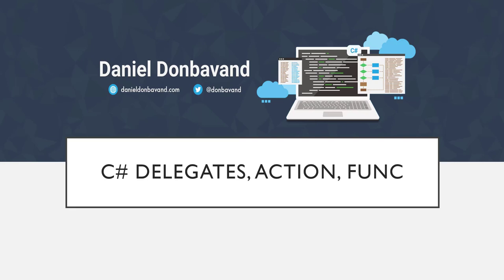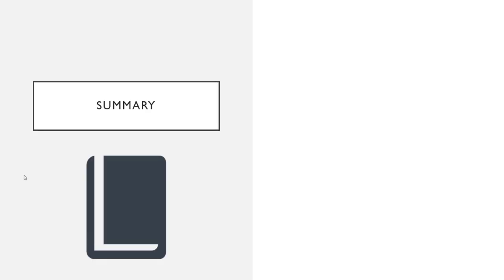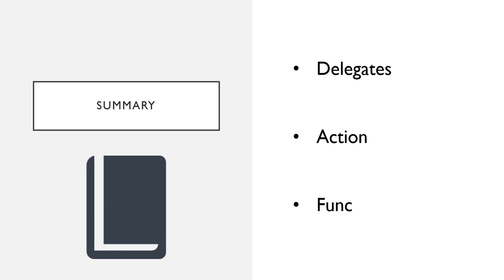Hello and welcome to this video on C-Sharp Delegates, Action and Func. We'll start off by covering what a delegate is and why they exist in C-Sharp. We'll follow a demo that demonstrates how to declare a delegate type and a delegate instance before creating a calculator demo. We'll then talk about what an action is and refactor our delegate demo to use action. Finally, I'll explain what a func is and again refactor our demo solution to use func.